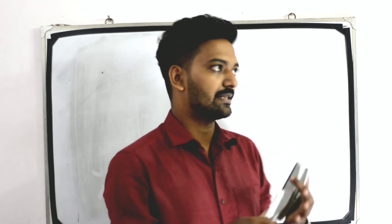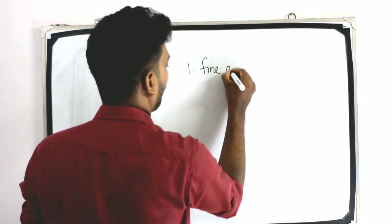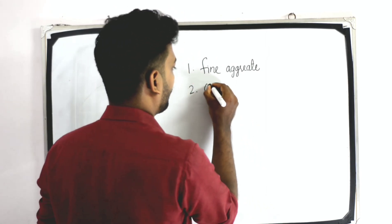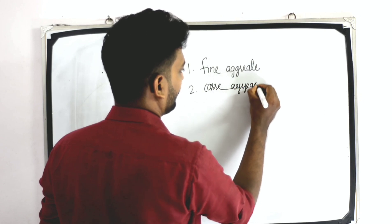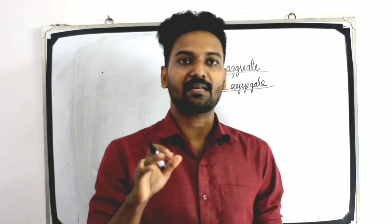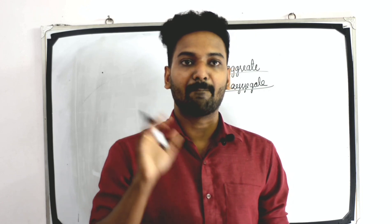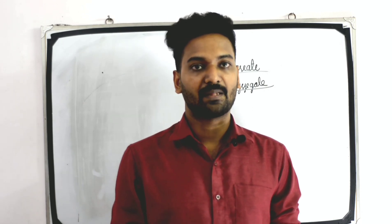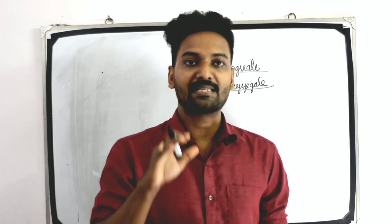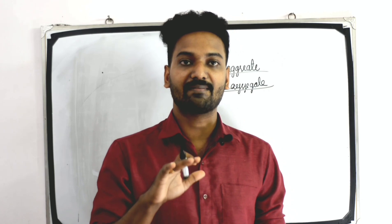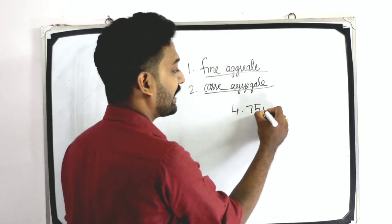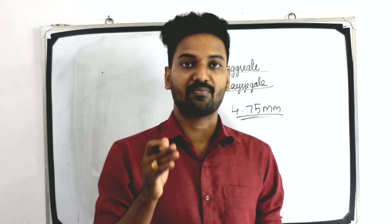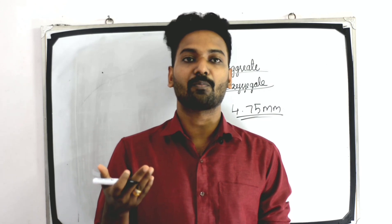Aggregates are classified into two types: fine aggregate and coarse aggregate. Fine aggregates are aggregates which pass through 4.75 mm IS sieve, and coarse aggregates are those which are retained on 4.75 mm IS sieve. That is, the size of fine aggregate is less than 4.75 mm and coarse aggregate is greater than 4.75 mm.